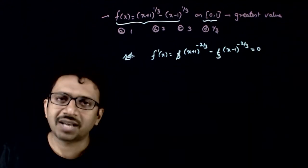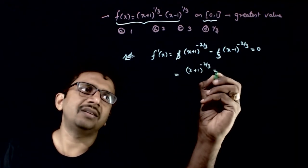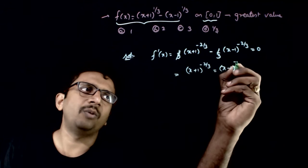This 1 by 3 and 1 by 3 gets cancelled. This implies x plus 1 whole power minus 2 by 3 is equal to x minus 1 whole power minus 2 by 3.